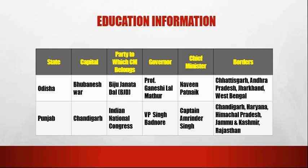The next state is Odisha. The party to which the CM belongs is Biju Janata Dal (BJD). The governor is Professor Ganeshi Lal. The chief minister is Naveen Patnaik. The borders are Chhattisgarh, Andhra Pradesh, Jharkhand and West Bengal.